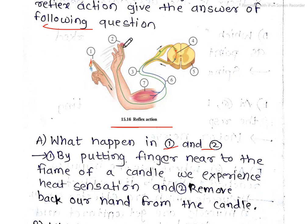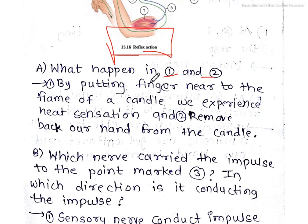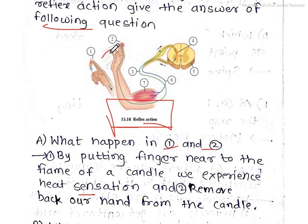So let me show you the heat sensation in one hand when we touch the candle. We have heat sensation in one hand. This is how we say that reflex action. By putting finger near to the flame of a candle, we experience heat sensation, and second point, we move back our hand from the candle. This is all the reflex action.